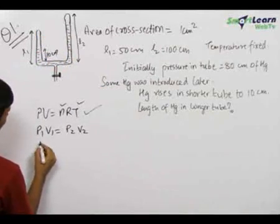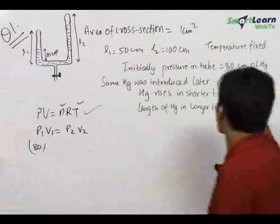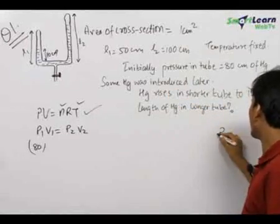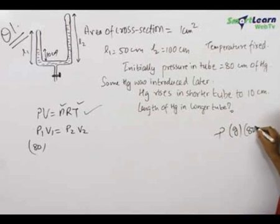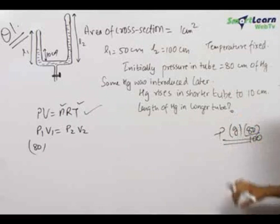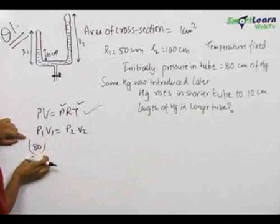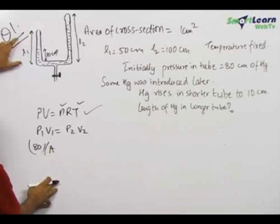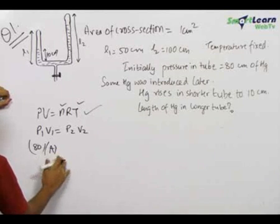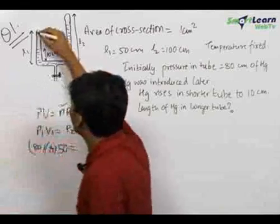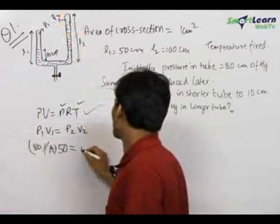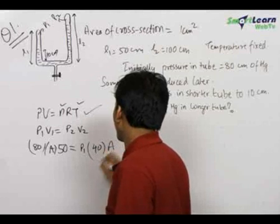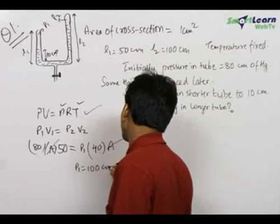Applying this, the initial pressure was 80 centimeters of mercury, which means it equals the pressure of a mercury column of height 80 centimeters. We keep it in terms of centimeters of mercury. The initial length L1 was 50 centimeters, so we write: 80 times A times 50 equals P2 times A times 40, since the remaining length after mercury rises 10 cm is 40 centimeters. Solving this gives P1 equals 100 centimeters of mercury.